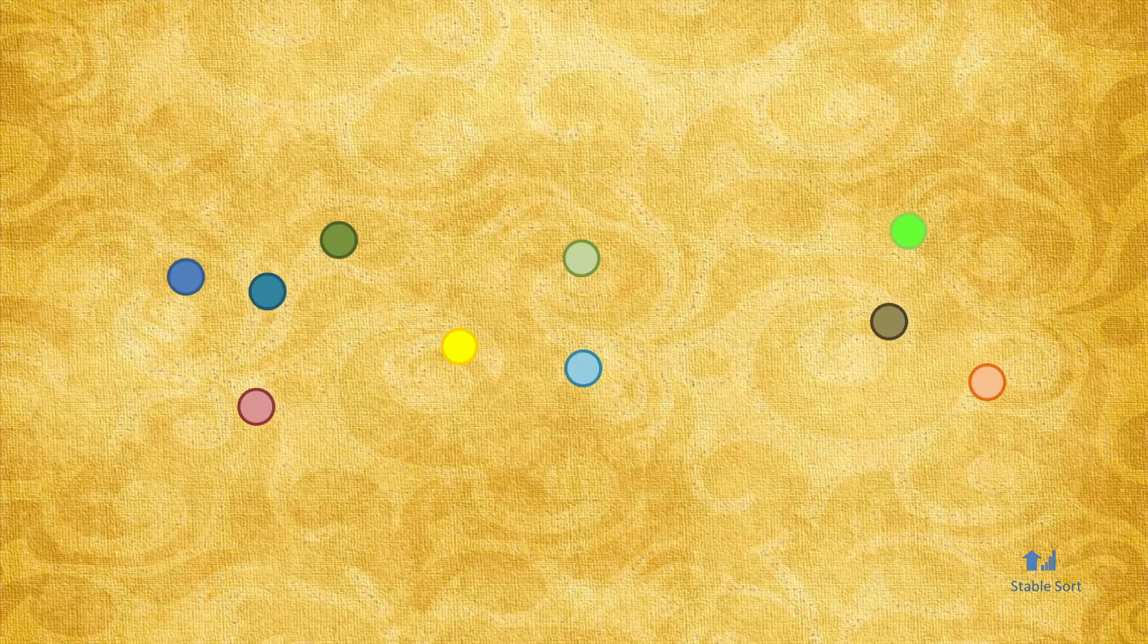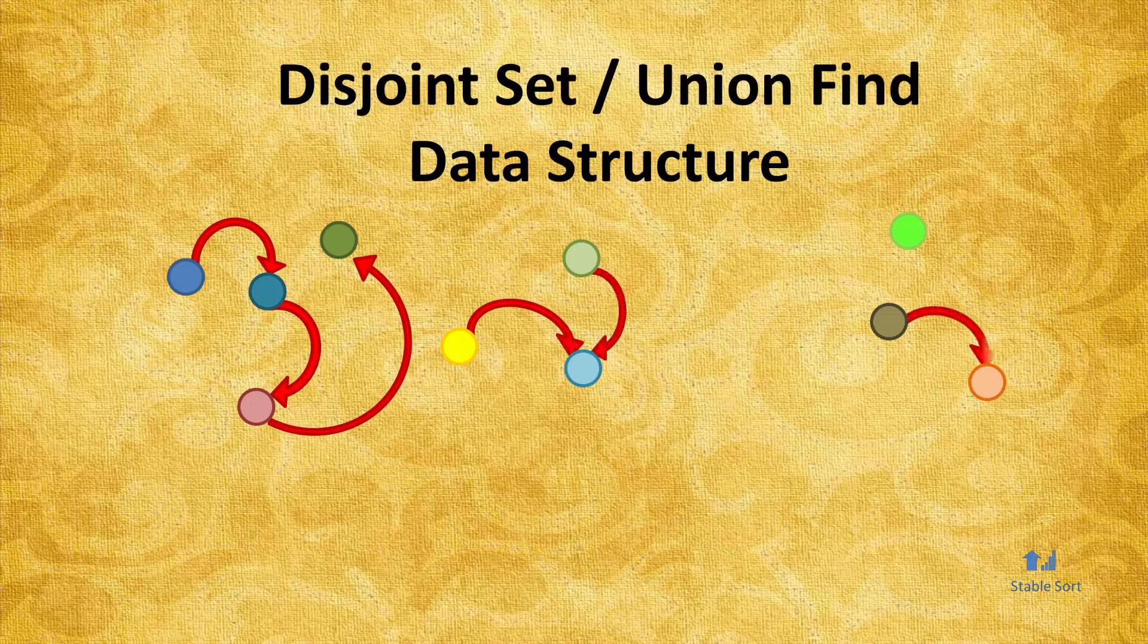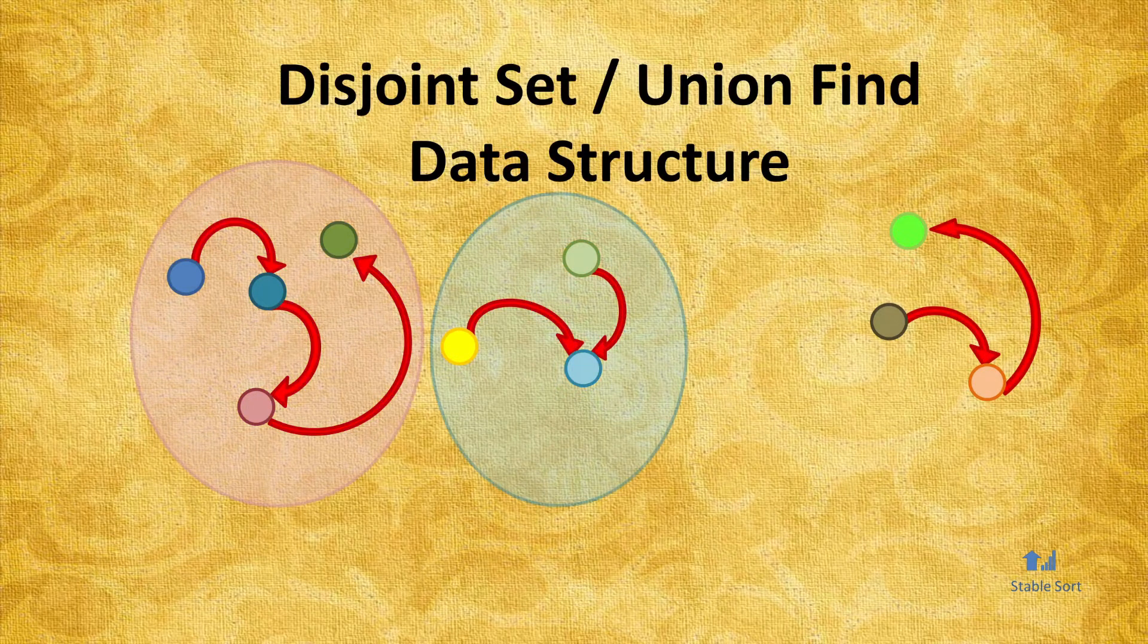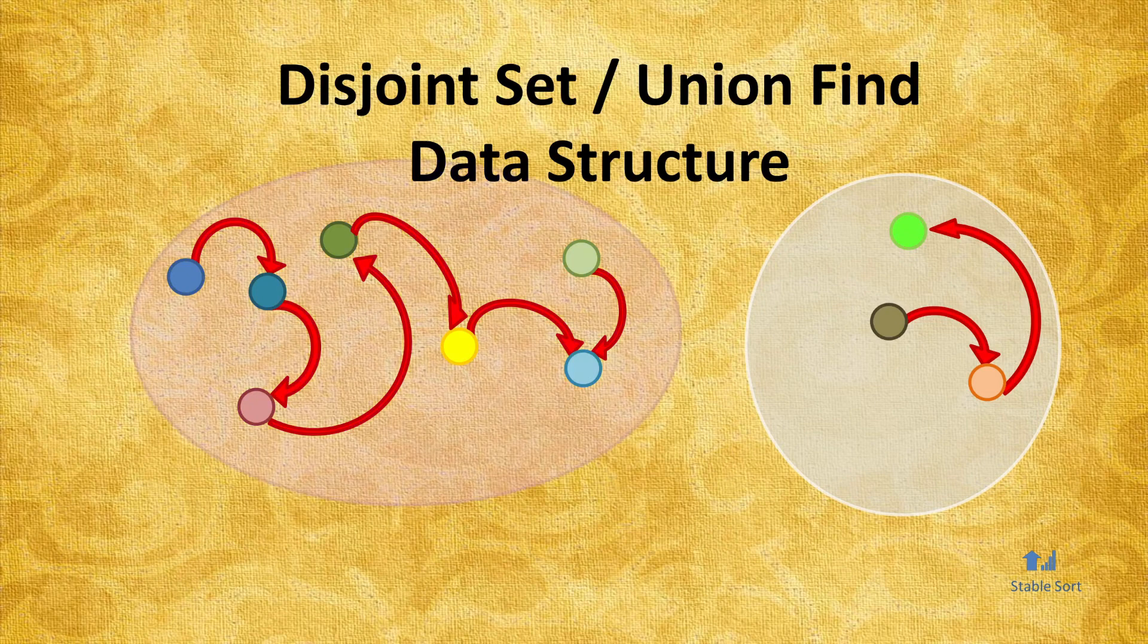In this tutorial, we will learn all about a data structure called Disjoint Set, sometimes also referred to as Union Find or Merge Find Set. This is a remarkably simple data structure, yet it has the power to solve certain problems that are otherwise very difficult to deal with.